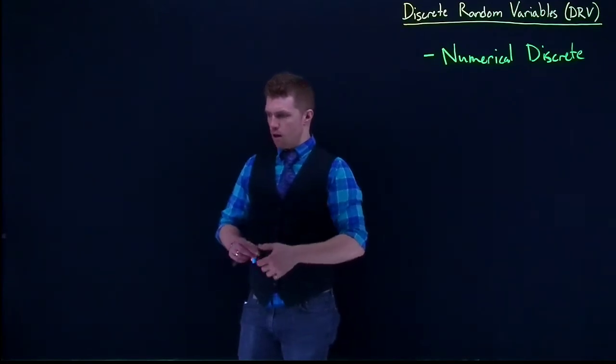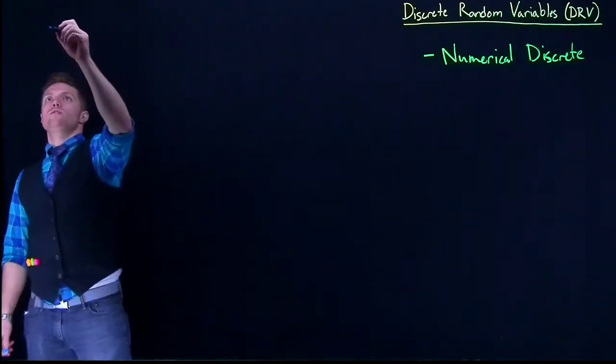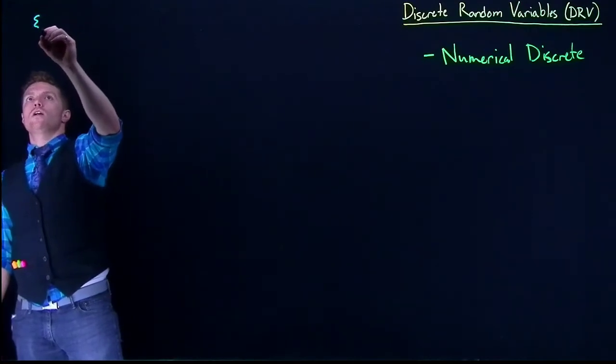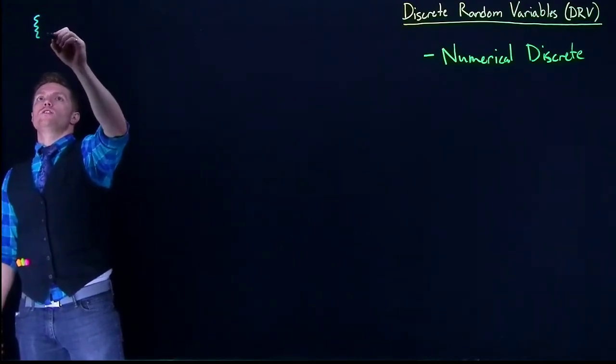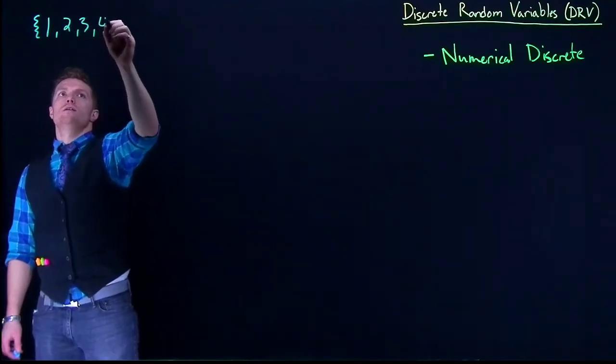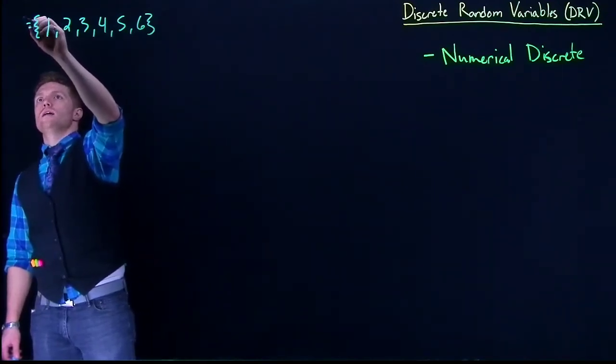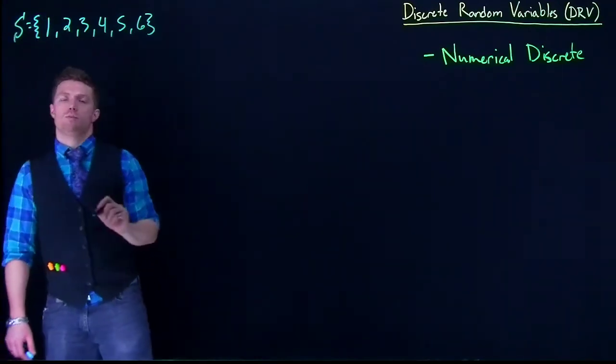To get started, let's consider once again rolling a dice. We can always start off with our sample space being 1, 2, 3, 4, 5, and 6. This would be our sample space.